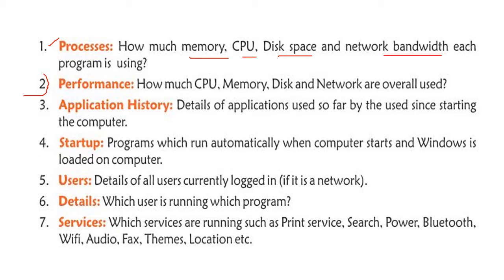Next is the Performance tab. Performance tab shows how much CPU, memory, disk, and network are overall being used. यदि आप online काम करते हैं, तो इसमें आप देख सकते हैं कि आपका WiFi कितनी speed से चल रहा है। Network signal में जाने पर WiFi और Ethernet सब कुछ दिखता है।